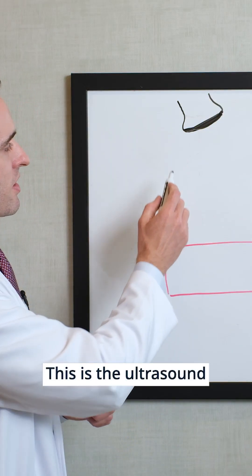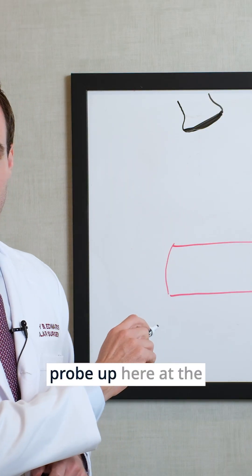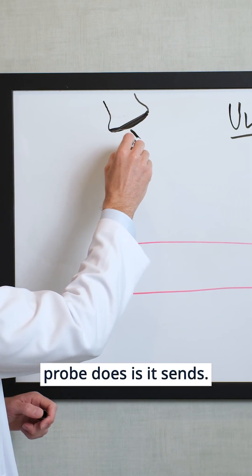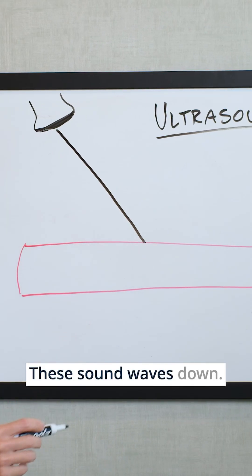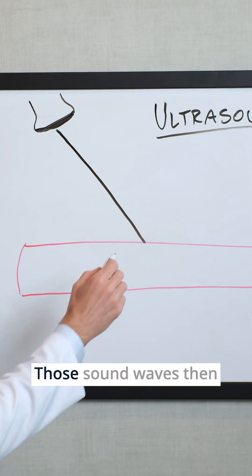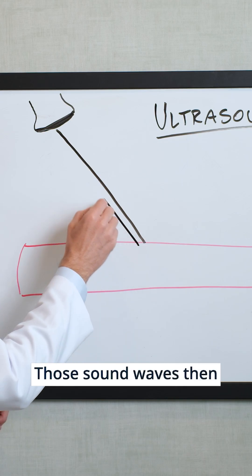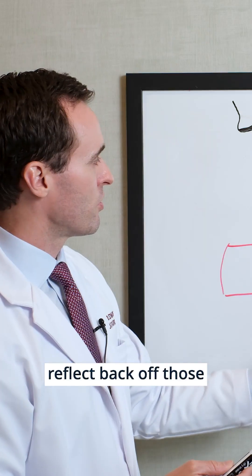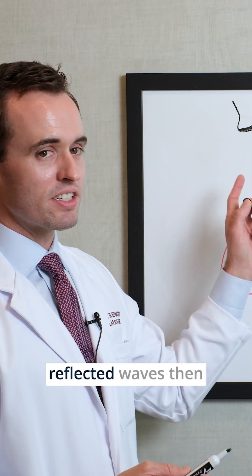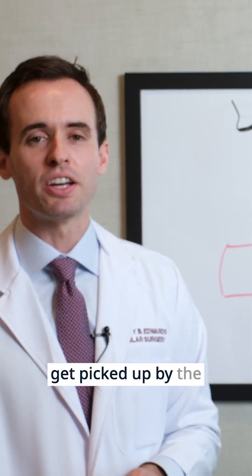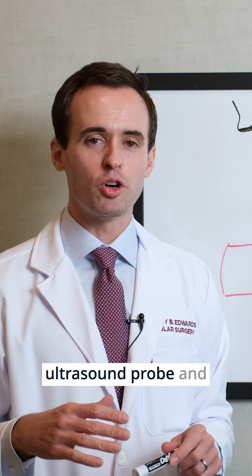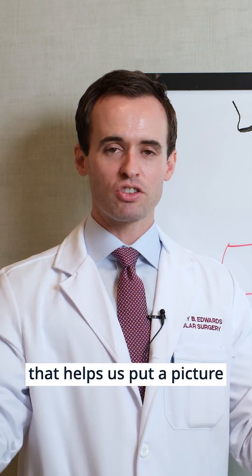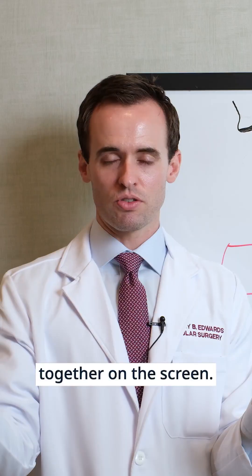This is the ultrasound probe up here at the top of the screen. What the ultrasound probe does is it sends these sound waves down. Those sound waves then reflect back off, and those reflected waves get picked up by the ultrasound probe. That helps us put a picture together on the screen.